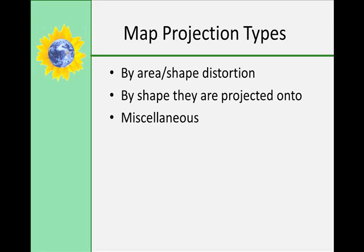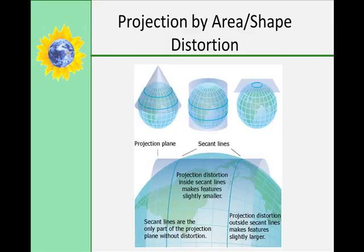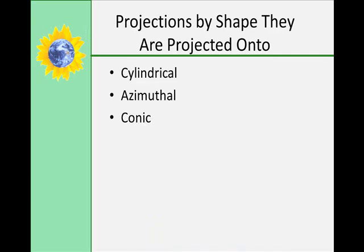Projections can be classified by their area or shape distortion, by the shape they're projected onto, or by miscellaneous categories including unprojected and other projection types. When discussing area and shape distortion, you can have equivalent or conformal projections. Equivalent means equal area — the area is similar on the globe and flat map, but the shape is not. Conformal means the shape is similar on the globe and flat map, but the area is not. Cylindrical projection is a projection of a sphere onto a cylinder. The lines of longitude generally appear parallel — that's how you recognize a cylindrical projection.